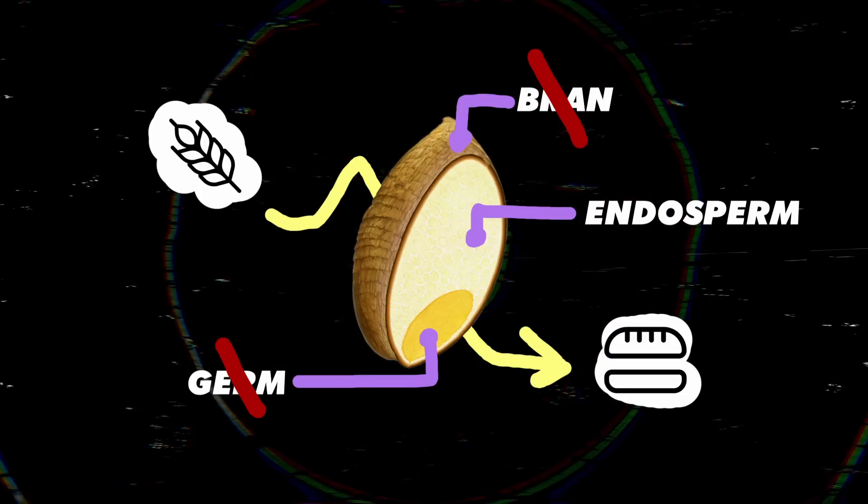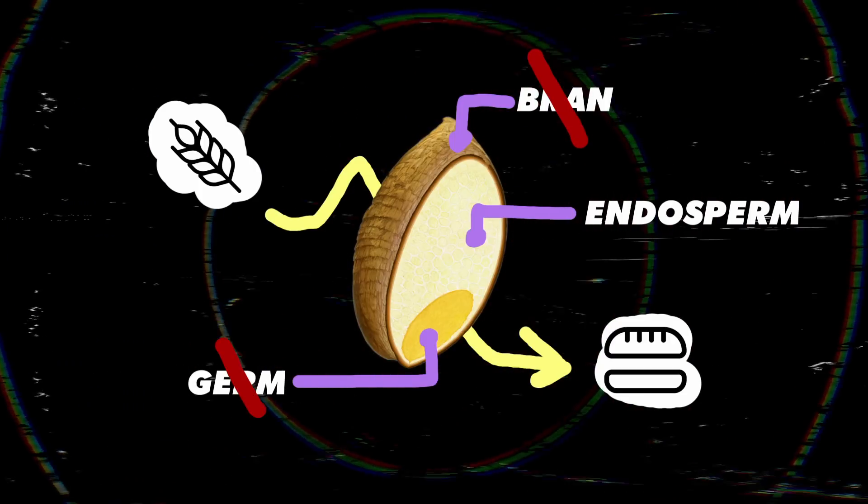In fact, if it wasn't for the endosperm, this plentiful starch, we wouldn't be nearly as interested in the wheat grain, as this is the only thing that's left over when we refine the grain down into flour. That's right. We take out the bran and the germ when we make flour.